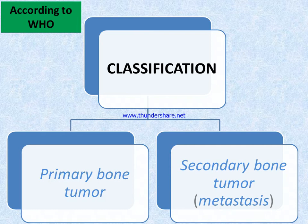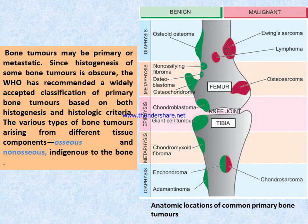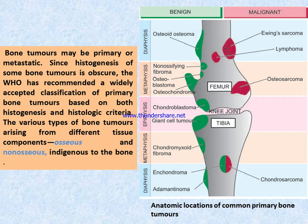Secondary bone tumor is also known as metastasis. According to WHO, the widely accepted classification of primary bone tumor is based on both histogenesis and histologic criteria. Various types of bone tumors arise from different tissue components, like osseous and non-osseous elements indigenous to the bone.